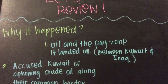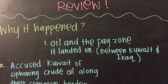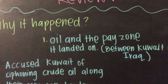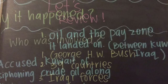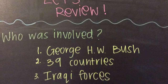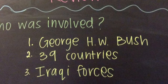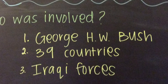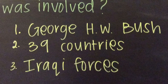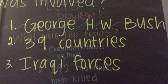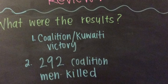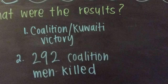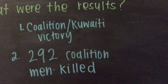The two main reasons this war occurred were because of the oil and the location it was on, along with accusing Kuwait of siphoning crude oil. Three main keys were involved in this war: the first being George Bush, the second being the 39 countries part of the coalition, and the third being Iraqi forces. The two main results of this war were a coalition and Kuwaiti victory, along with the 292 coalition men killed. Thanks for watching!